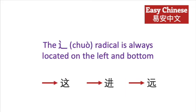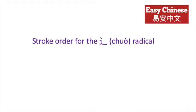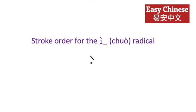The chuo radical is always located on the left and bottom of the character. The stroke order for the chuo radical is yi, ar, san.